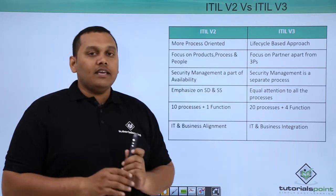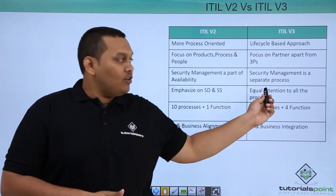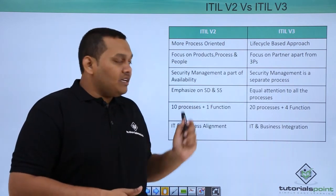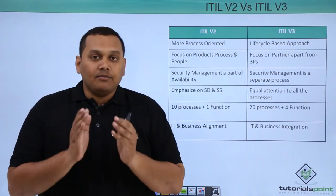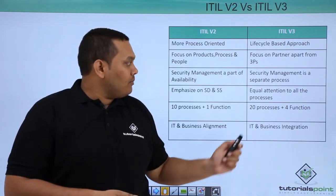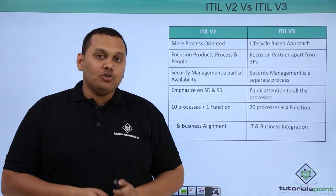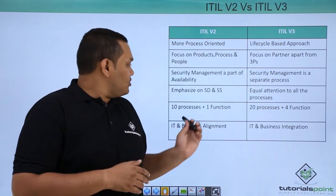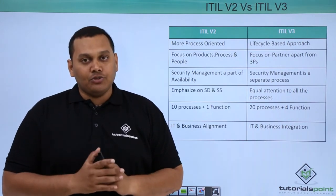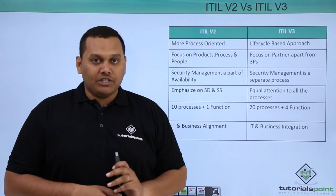In version 2, security management is available but not as a separate process. In version 3, security management is a separate dedicated process. Additionally, version 2 concentrated more on service delivery and service support, whereas in ITIL v3, equal attention is given to all processes. Version 2 has 10 processes plus one function, while version 3 has 20 processes and four functions.